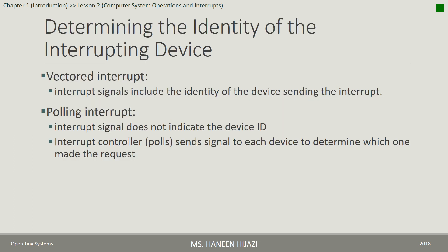Determining the Identity of the Interrupting Device. كيف بنحدد مين هو الـ Device اللي عمل الـ Interrupt؟ عندنا نوعين: الأول Vectored Interrupt، اللي بيكون فيها الـ ID تبع الـ Device included في الـ Interrupt Signal نفسها. النوع الثاني Polling: في الـ Polling، الـ Interrupt ما بيكون فيه الـ ID، فبيقوم الـ Interrupt Controller يعمل Polling يعني بيبعث Message لكل Device عشان يحدد مين اللي عمل الـ Interrupt.